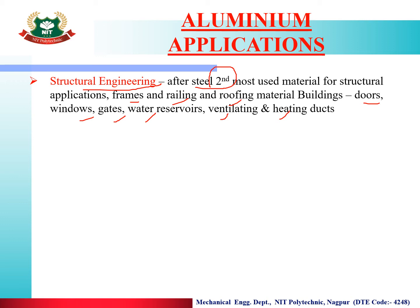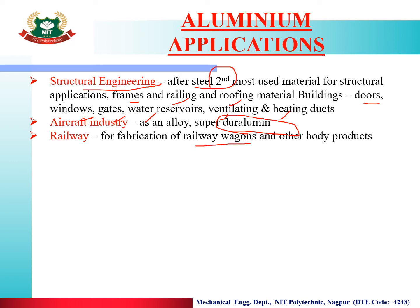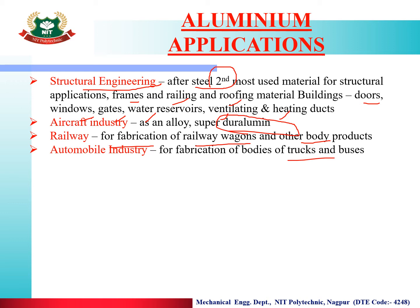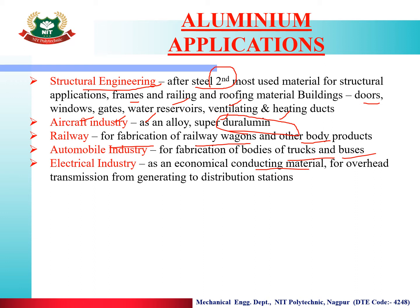In the aircraft industry, an alloy called Duralumin is used for making airplanes. For railways, aluminium is used to fabricate wagon bodies. In the automobile industry, aluminium is used for truck and bus underbodies. In the electrical industry, it is used for wires and overhead transmission lines.